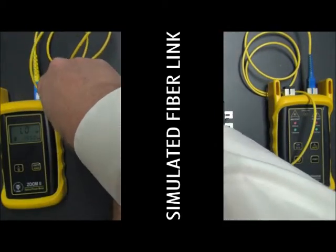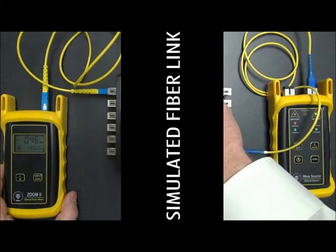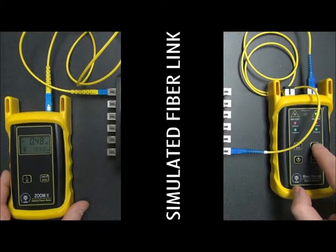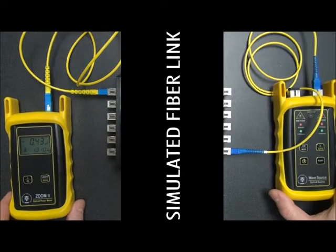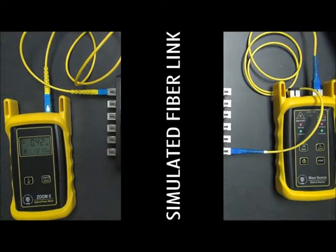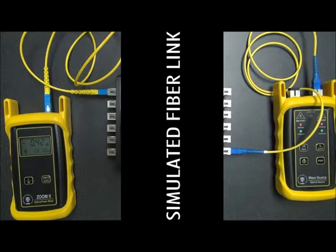For simplicity, we test at 1310 nanometers first — it keeps things more organized. We change the wavelength on both units to 1310. We now have a reading on the screen of approximately 0.4 dB loss. This is a reading you would compare to a link budget. For this example, let's assume a link budget of 3 dB. Since 0.4 dB does not come close to 3 dB, this particular fiber is working properly at 1310 nanometers.